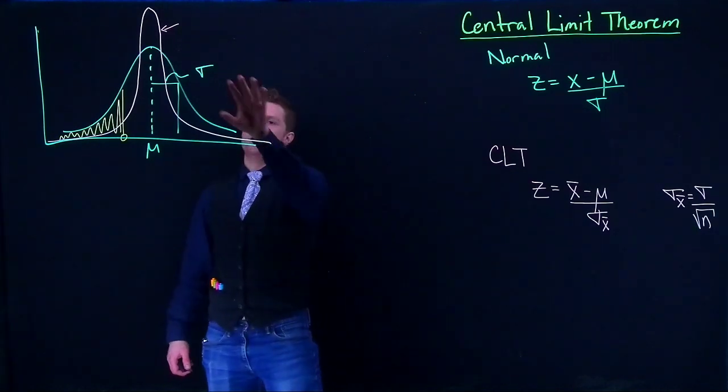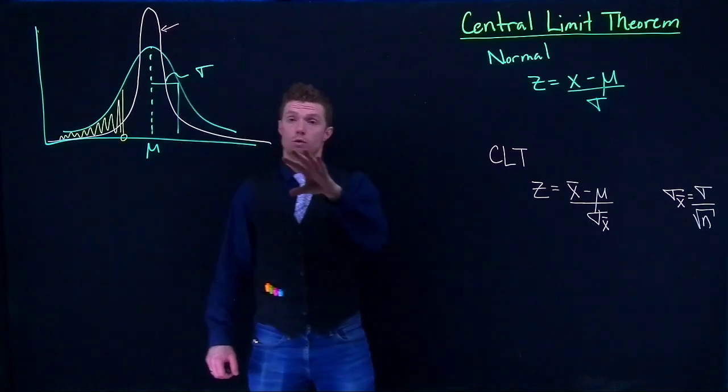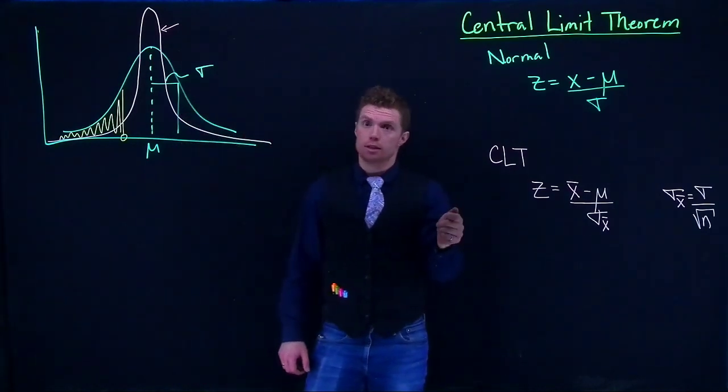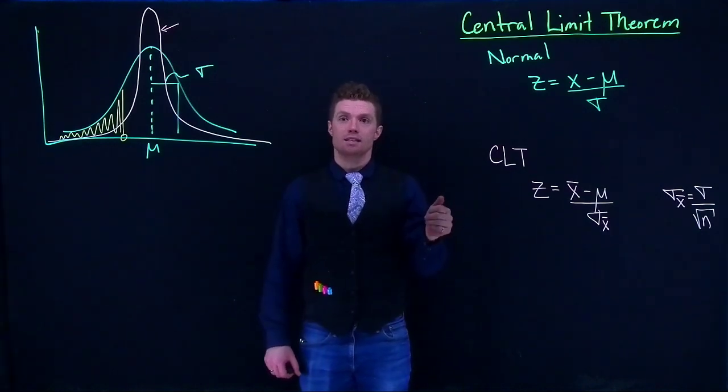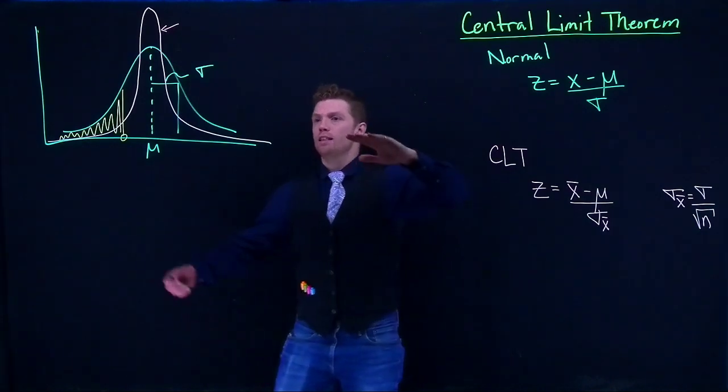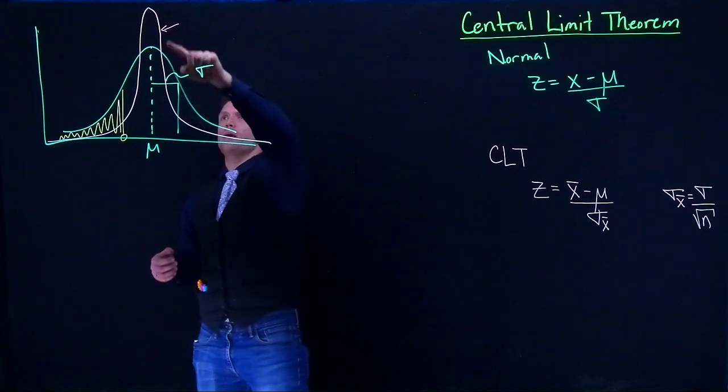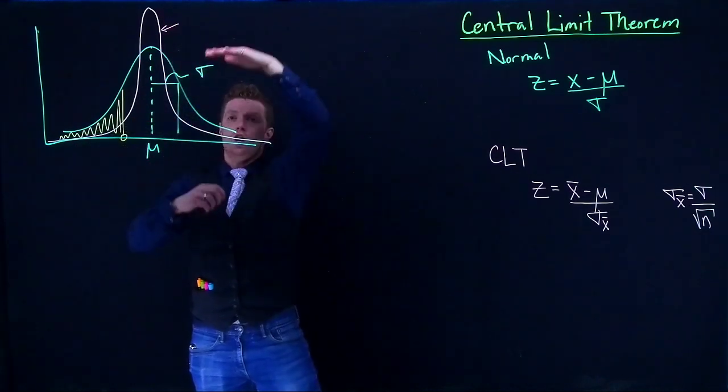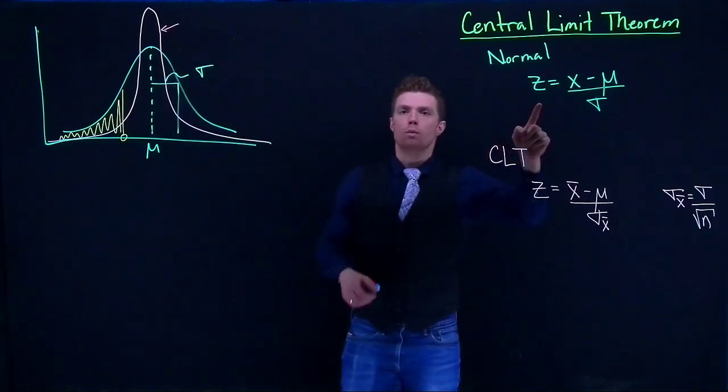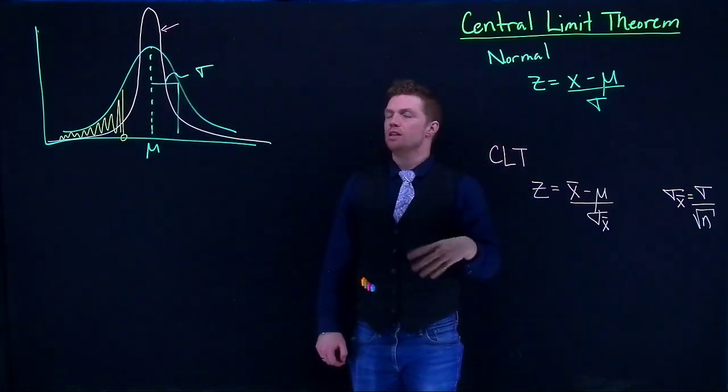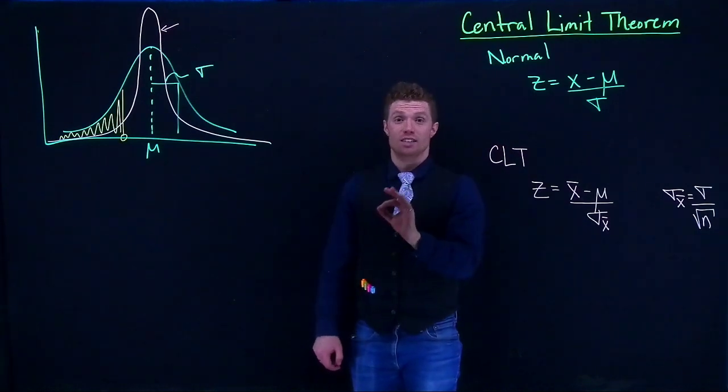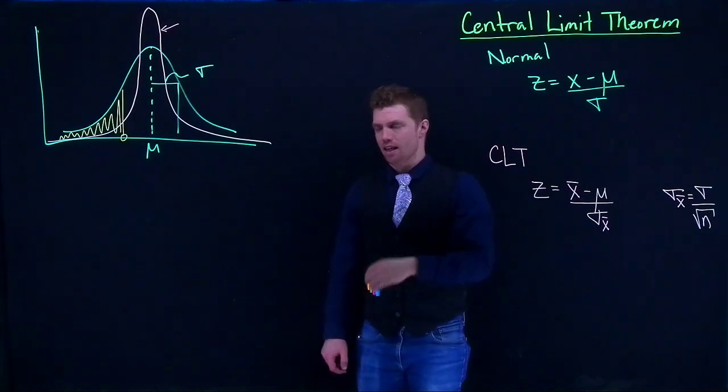So we already talked about how if our original distribution is normal, and instead of talking about individual measurements, we talk about the means of a specific sample, that the sampling distribution, or what we have here in this lighter pink color, gets narrower and taller than the original normal distribution. Let's have a discussion of how that exactly happens.